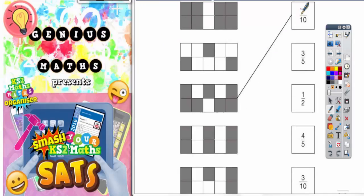Well you can see we've got 7 tenths shaded in and that's because there are 10 squares here. 1, 2, 3, 4, 5, 6, 7, 8, 9, 10. And actually only 7 of them are shaded in. 1, 2, 3, 4, 5, 6, 7. So 7 out of 10 shaded in.